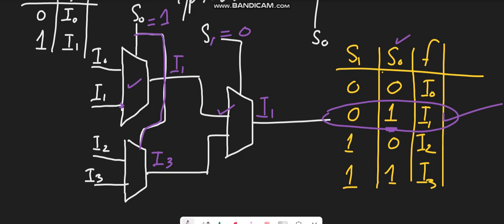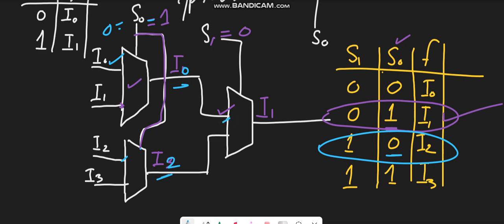Similarly, let's verify another combination. When s0 is equal to 0, the first MUX will select its first input at the output side, giving i0, and similarly the second MUX will forward its first input, which is i2. The third MUX then has i0 and i2 at its input lines. The value of s1 is 1, which means select the second input, so you will get i2 at the output side. This verifies the operation of the 4-to-1 line MUX.